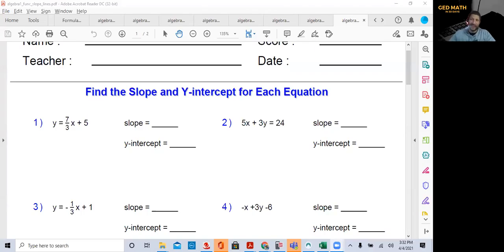Welcome to GED Math in 30 Days, and today we'll be discussing how to find the slope from an equation, or specifically how to find the slope from a specific form of the equation of a line, and that's called slope-intercept form, and it's very easy.